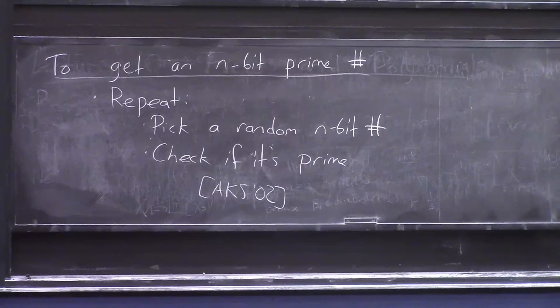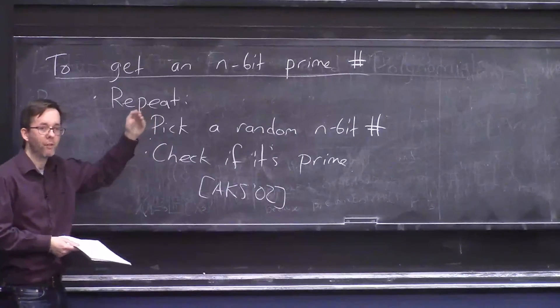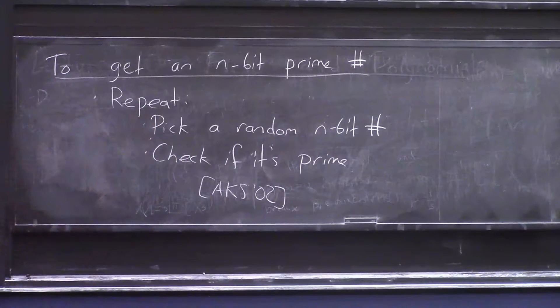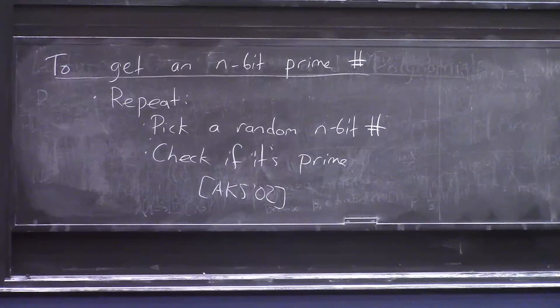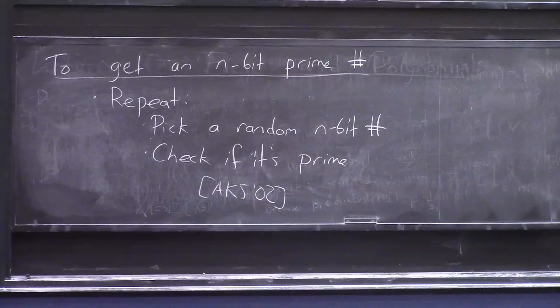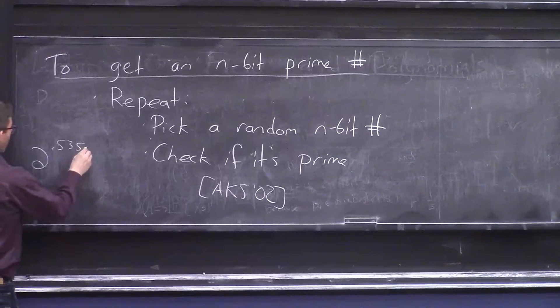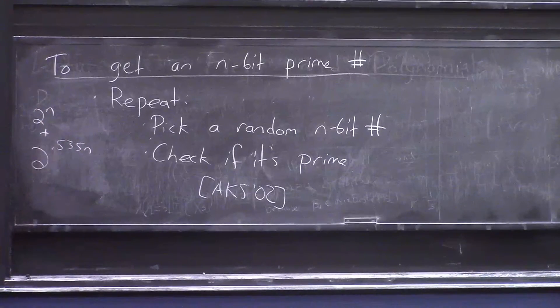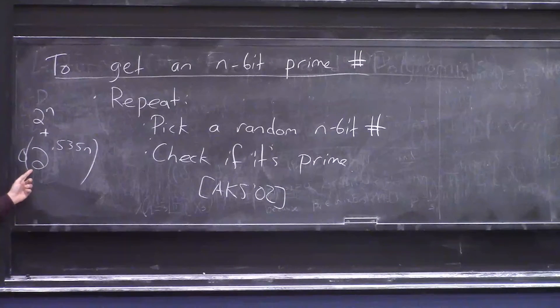And therefore, if you believe Cramer's conjecture, then it's fine. You can do this algorithm. Just start at 2 to the n and keep going up, checking for primality. And after, you know, n squared many or so many tries, you'll find a prime. But that conjecture is unproven. And the best proven fact is that if you go up to 2 to the n plus 2 to the 0.535 n, then you'll get a prime. But this will take you, you know, exponential and n many tries. So we don't have that.